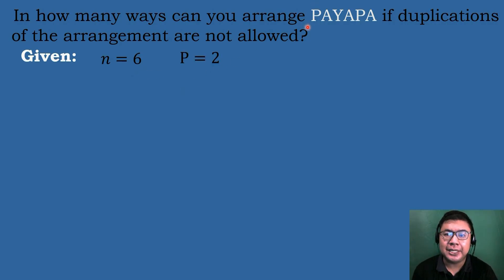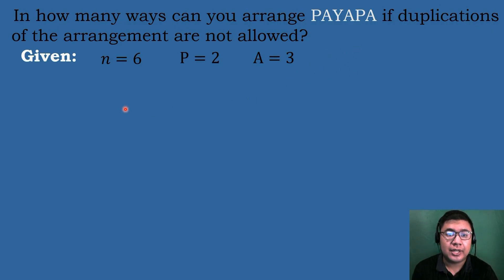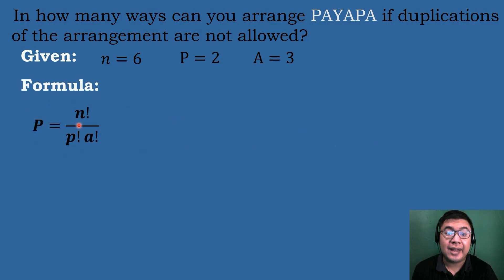For letter P, it is repeated 2 times, so P equals 2. Letter A is repeated 3 times, so A equals 3. Letter Y is repeated only once, so we will not include it in the denominator since multiplying by 1 does not change the result. The formula is: P equals N factorial over P factorial times A factorial.